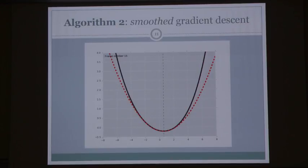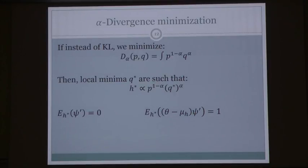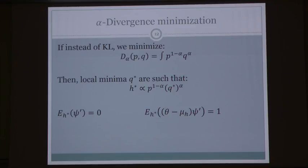Now let's talk about a slight variant of variational Bayes that minimizes the alpha divergence instead of the KL divergence. The local minima have an interesting characterization: if q* is a local minimum, we define the hybrid h* as a geometric mean of q* and p, and then the expected value of psi prime under h is equal to zero — once more very reminiscent of gradient descent.